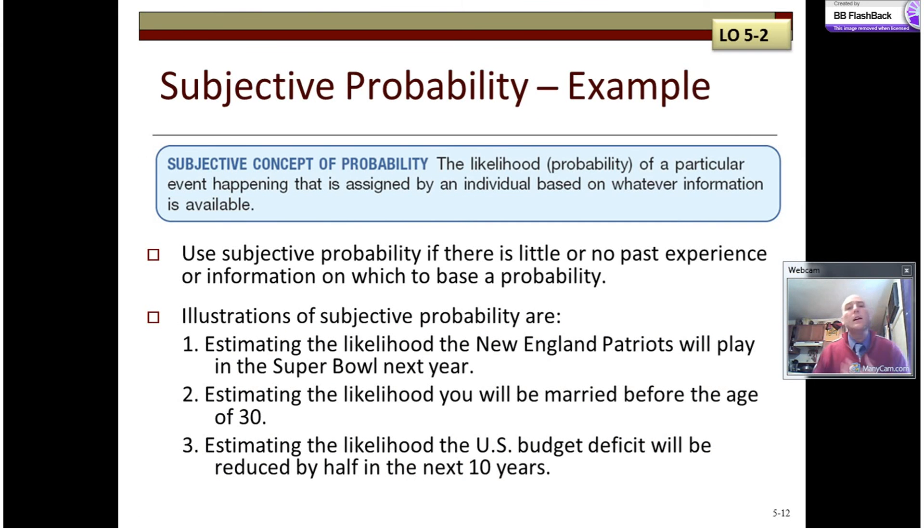Subjective probability, like I mentioned before, trying to figure out based on the information that I have available. It may not be the same as everyone else, but the subjective probability is used if there's little or no past experience, so we can't establish it empirically, or we might not know how many possibilities there are, so establishing it classically is not a possibility either. But if I wanted to, let's say, estimate the likelihood that the Patriots will play in the Super Bowl next year, I think I'm likely to say that's lower than the Steelers might make it to the Super Bowl next year. Not because of any sort of empirical evidence based on the past, it's just that I happen to be a Steelers fan, and I always think they're going to make Super Bowl because they're the best team in the league.